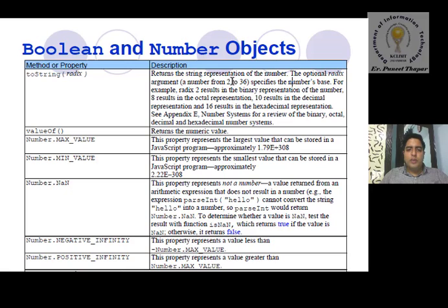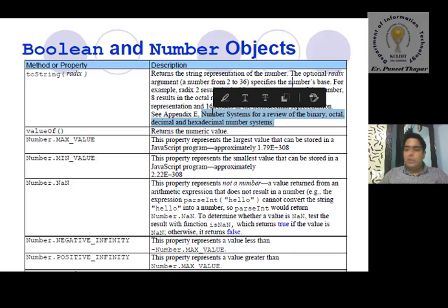Based on this base we can specify: radix 2 results in the binary representation of a number, 8 results in the octal representation, and 10 results in the decimal representation. This is all about how different number systems work — binary, octal, hexadecimal, decimal.